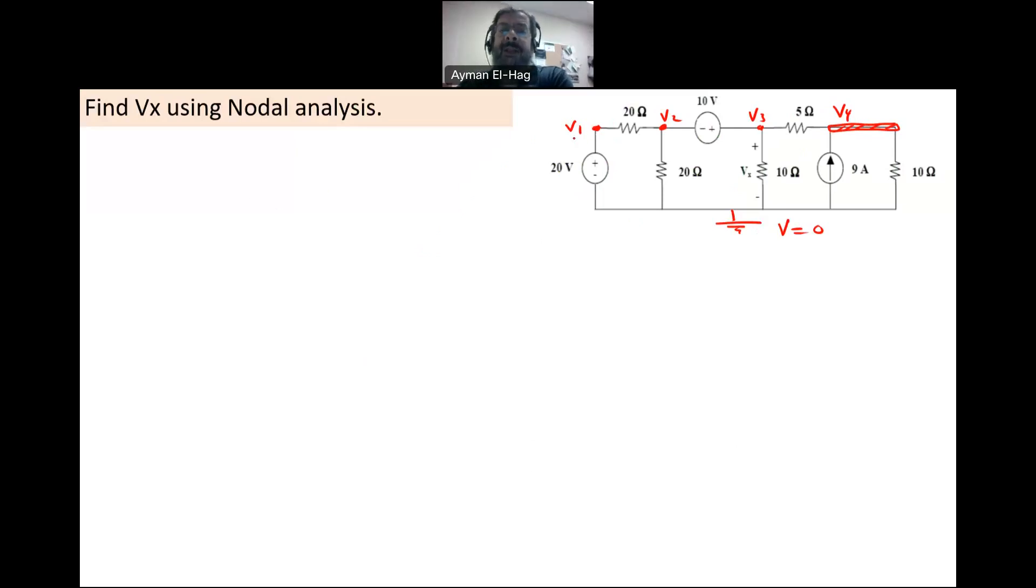Start from V1. Now V1 is basically the voltage between this node and the ground. And that is actually the meaning of the node voltages - it's the voltage between the node and the reference point or the ground. So the voltage between this point and the ground is basically the voltage supply. So as simple as that, your V1 is equal to 20 volts. And this is your first equation.